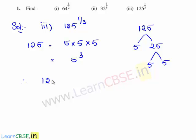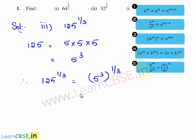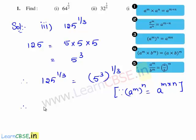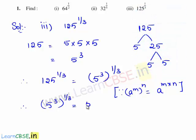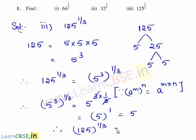Therefore, 125 raised to the power of 1 by 3 is written as 5 raised to the power of 3, whole raised to the power of 1 by 3. As we know, if a power is raised to a power, we need to multiply the exponents, since a power m whole power n can be written as a power m times n. Therefore, 5 raised to the power of 3 times 1 by 3 — the common factor 3 gets cancelled and we are left with 5 power 1, which is 5. Therefore, 125 whole raised to the power of 1 by 3 is equal to 5.